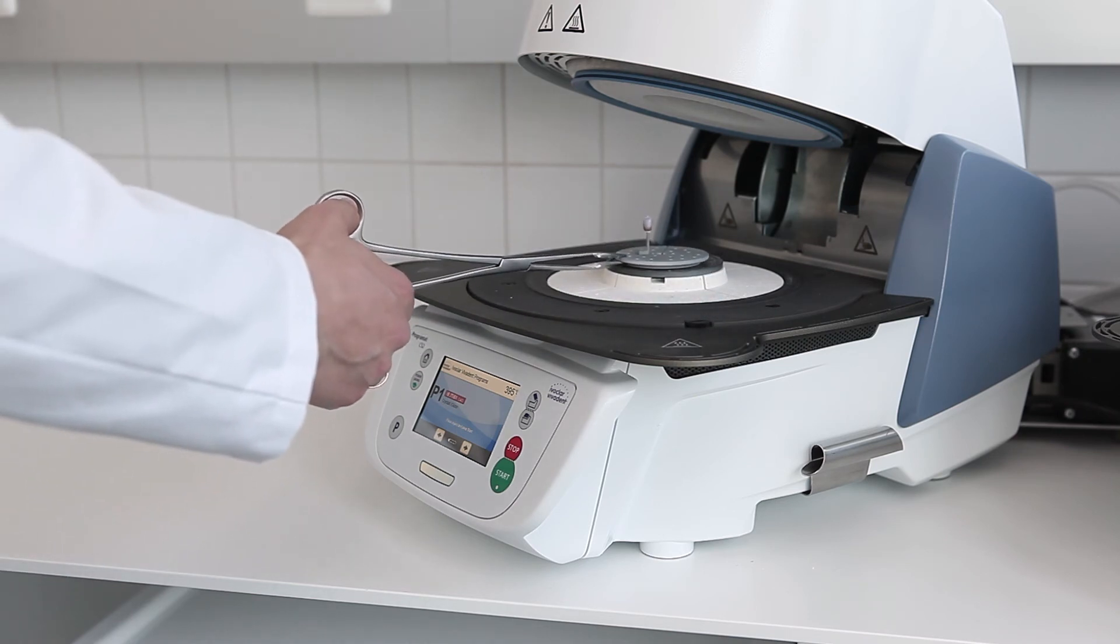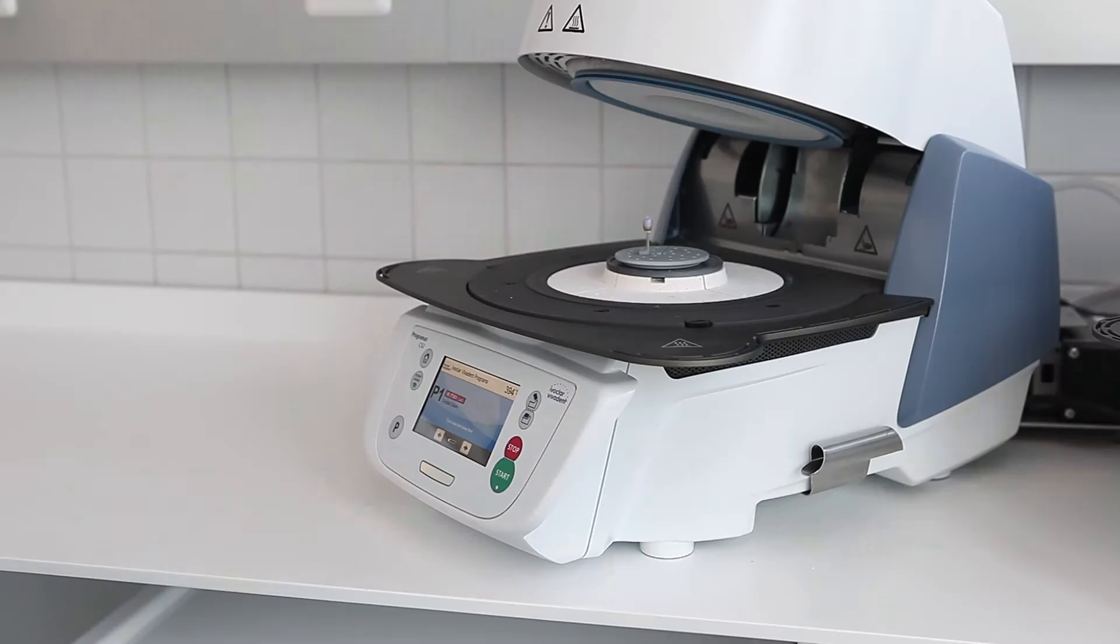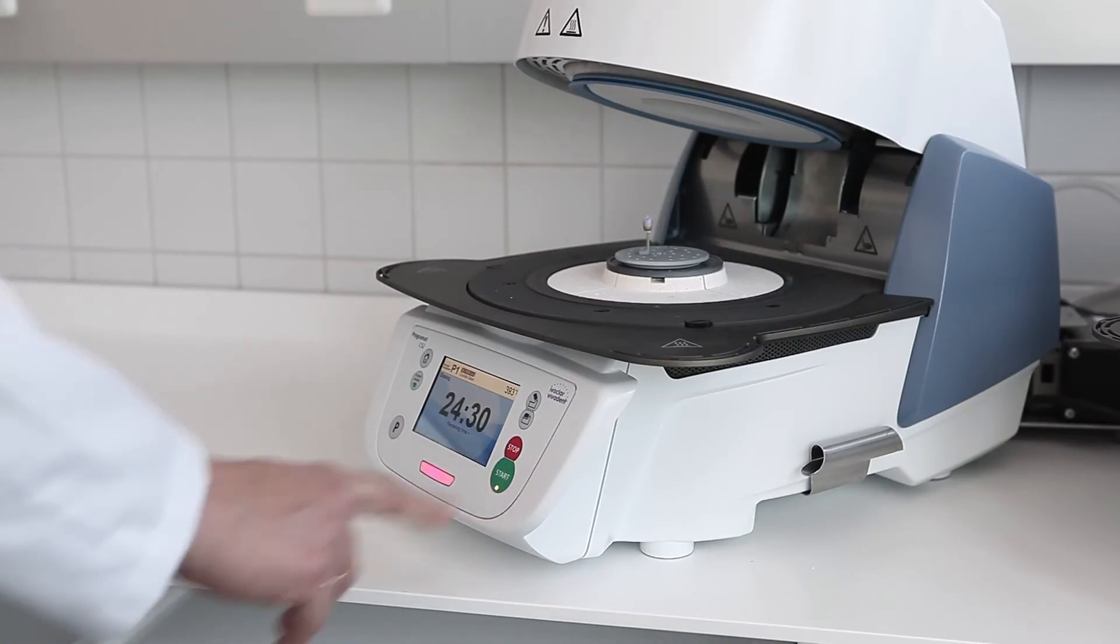Place the ceramic structure in the center of an IPS eMAX CAD crystallization tray and place the tray in the center of the furnace. Start the selected program.